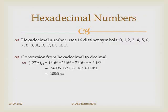What is the hexadecimal number system? It consists of 16 different symbols: 0 to 9, and then A, B, C, D, E, F representing 10, 11, 12, 13, 14, and 15 respectively.